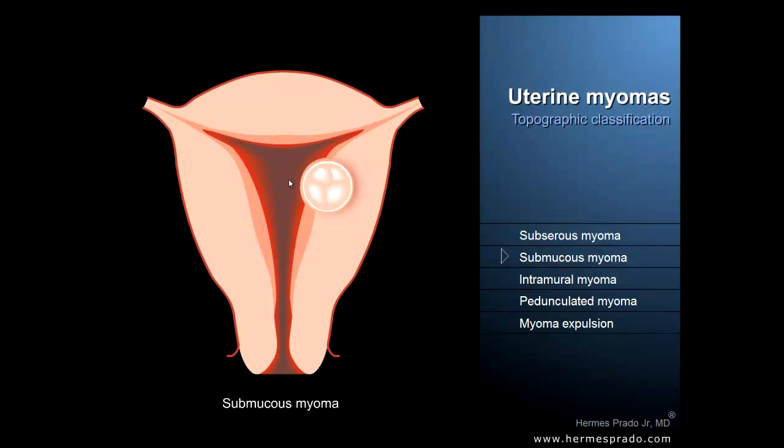And if the tumor grows towards the cavity of the uterus, protruding the mucosal lining, we call it a submucosal myoma or submucosal fibroid.